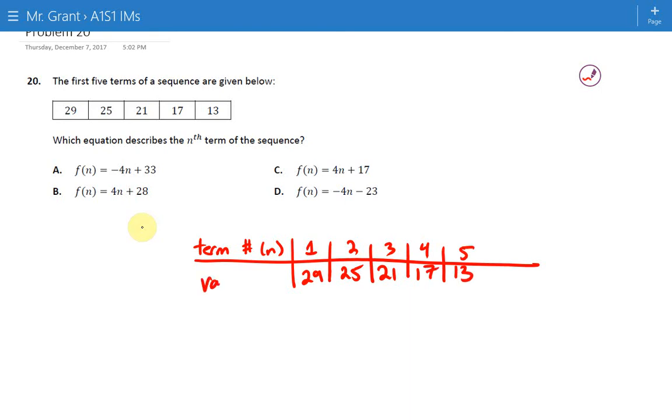And then the value of that term number, which is like the output in this case, if you look at your equations, it looks like the value is given by f of n. So if you wanted a few of these, we could say that f of 1, the first term has a value of 29. Or alternatively, when you plug 1 into your equation, the answer better be 29.